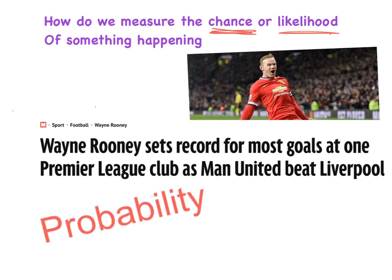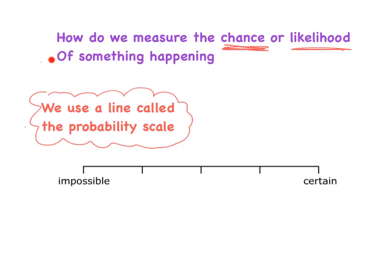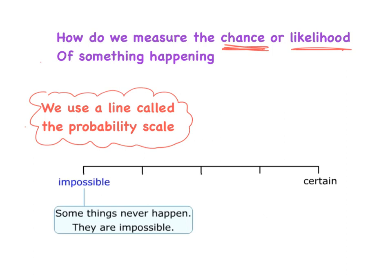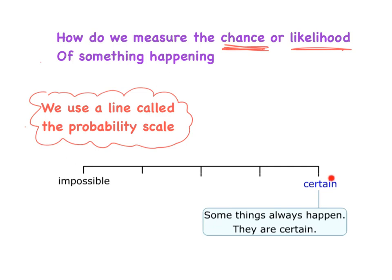Probability is when you assess the chances or the likelihood of something happening. So how do we measure the chance or likelihood of something happening? We measure using a scale — a probability scale. When we first look at this scale, it goes from impossible the whole way up to certain. Something is impossible if it will never happen. Something is certain if it is always going to happen.